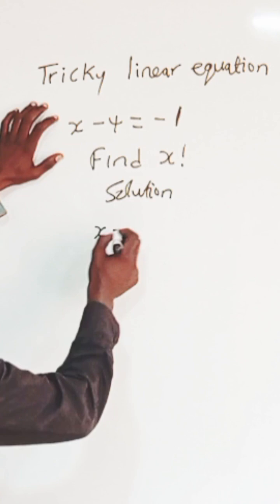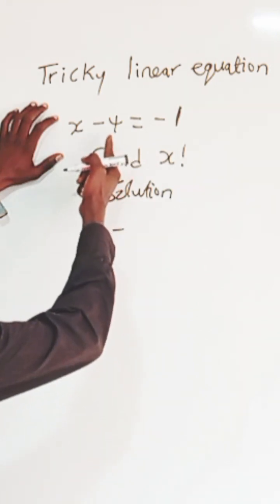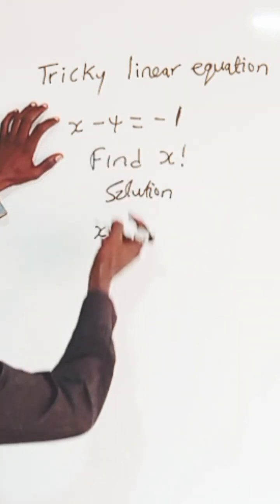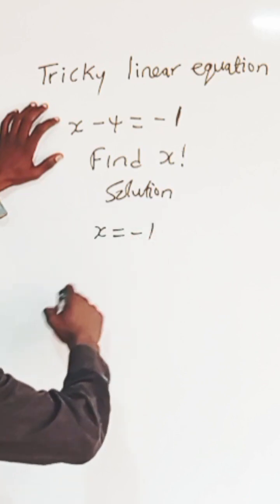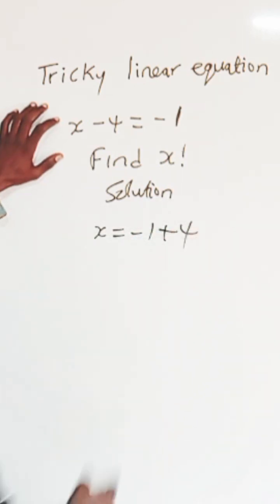If I add 4 to both sides, this becomes zero, so x equals minus 1 plus 4. Minus 1 plus 4 is 3, so x equals 3.